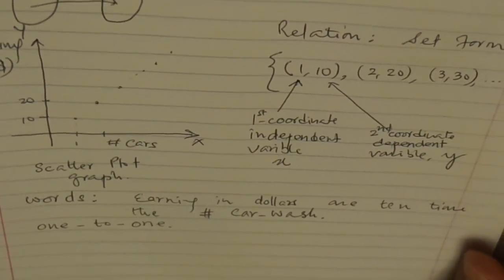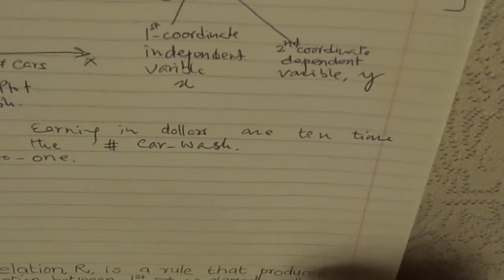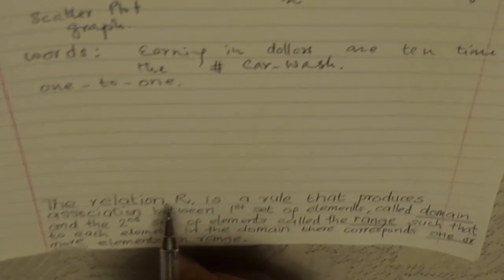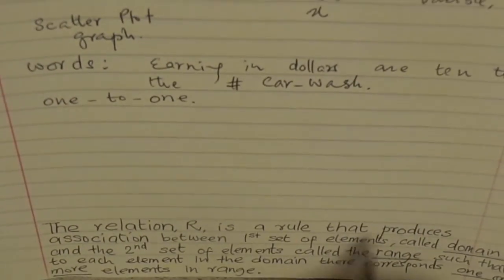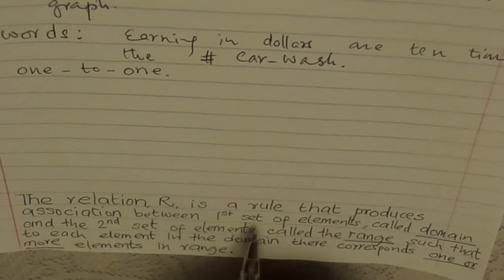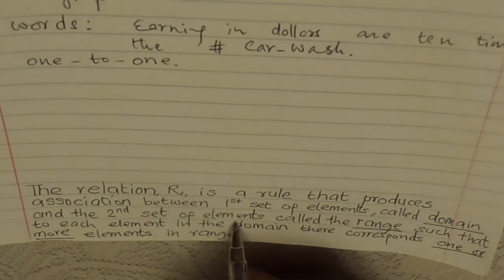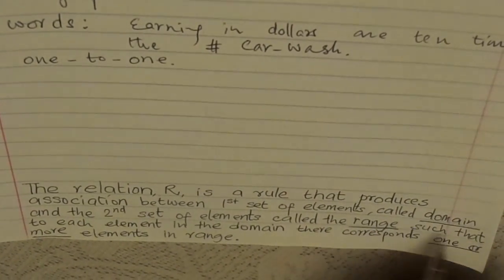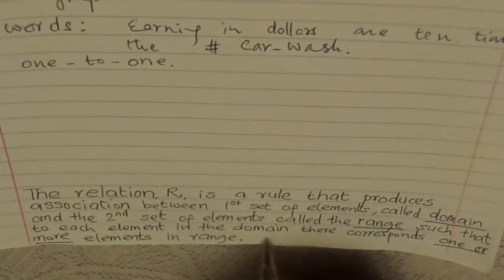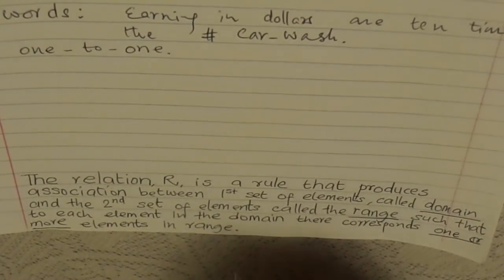Now it's time to really define a relation. The relation R is a rule that produces an association between a first set of elements called the domain and a second set of elements called the range, such that to each element in the domain there corresponds one or more elements in the range.